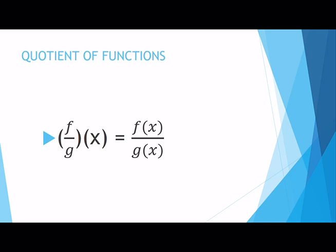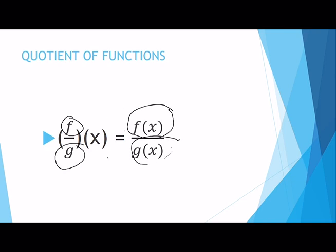Let's continue with the quotient of functions. The notation is (f/g)(x) = f(x)/g(x). Take note that you cannot interchange the placement of your functions. Whatever is on the numerator stays on the numerator, and whatever is on the denominator stays on the denominator. You cannot say that f over g of x equals g(x) over f(x) — that's wrong, because there is no commutative property for division. So be careful in writing your function notation for the quotient of functions.